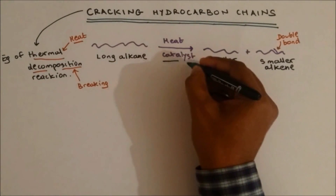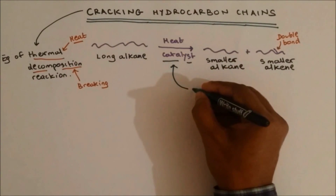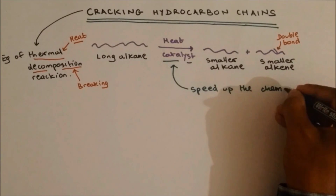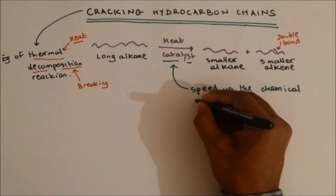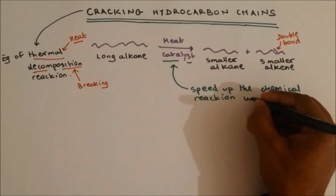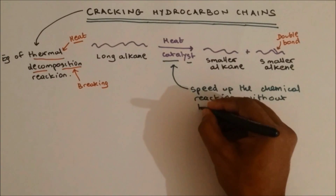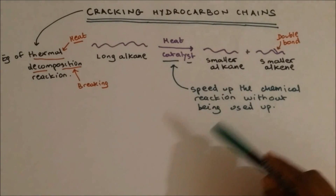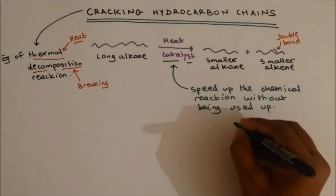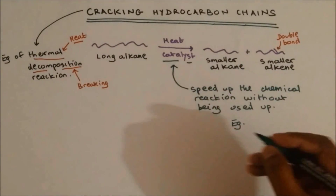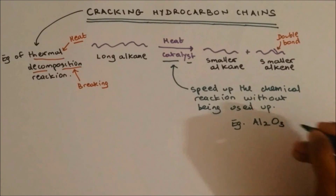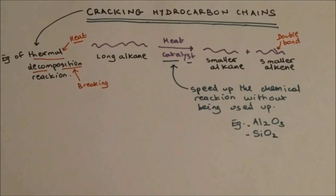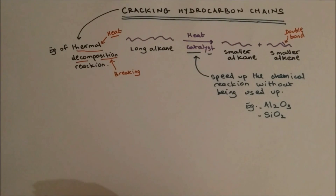Now, why are we using a catalyst? Because the catalyst speeds up the reaction. At the end of the reaction, the catalyst will still be present. A well-known example of a catalyst when it comes to cracking is aluminium oxide, which is Al2O3, and SiO2, silicon dioxide.